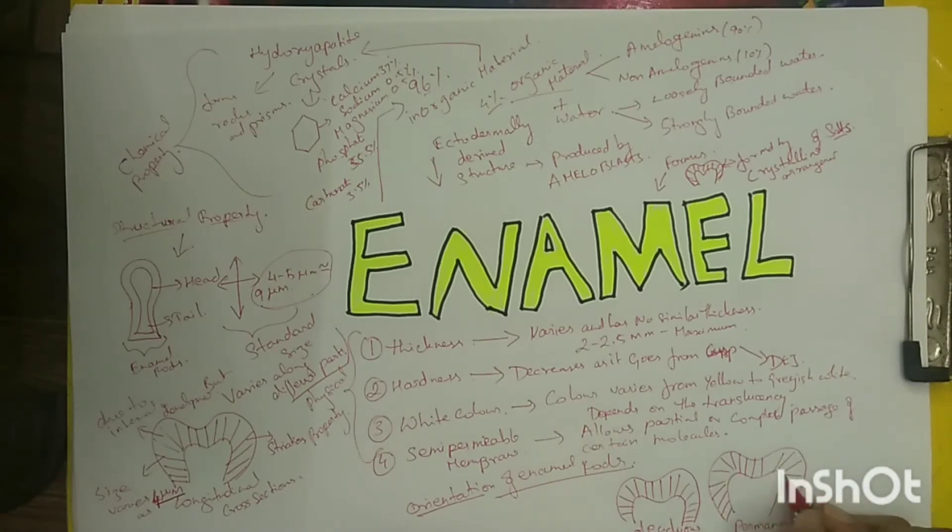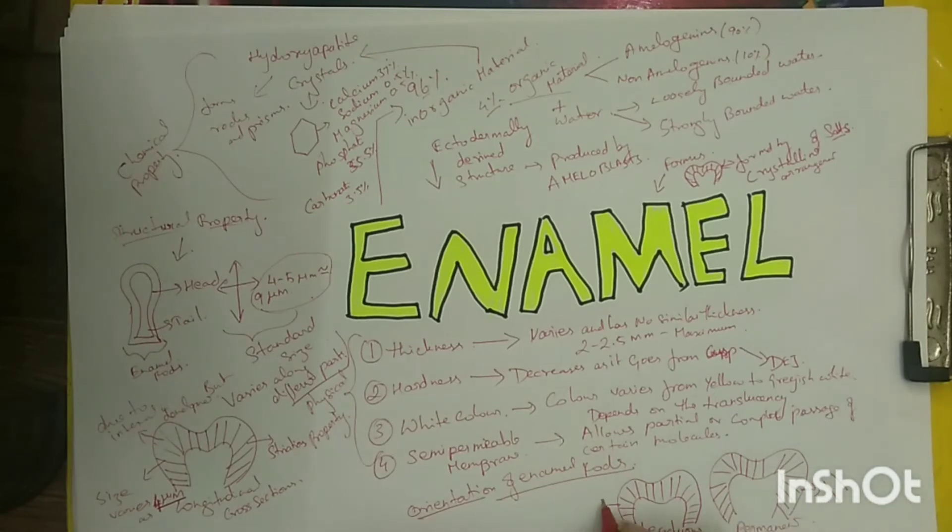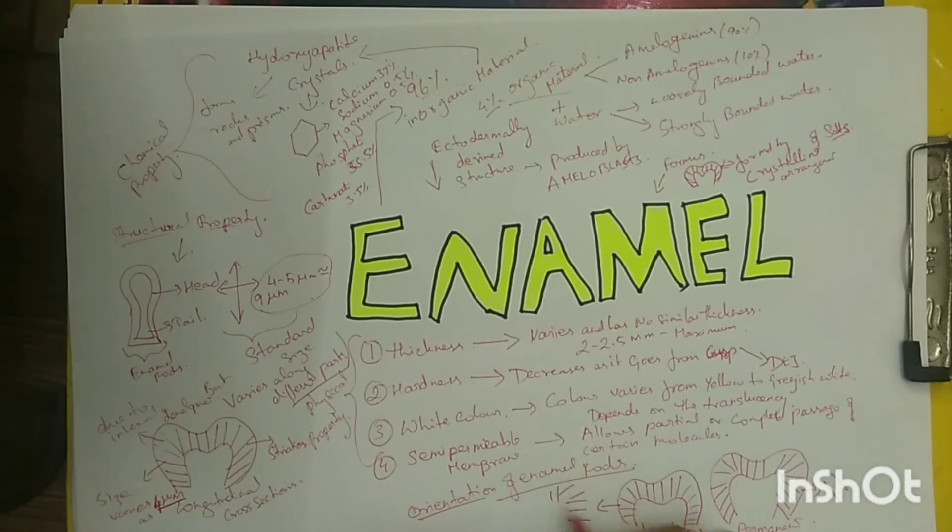In permanent teeth, the arrangement is similar to deciduous teeth in the occlusal and middle third. In the cervical third, the enamel rods show a rootward inclination or pass outwards.